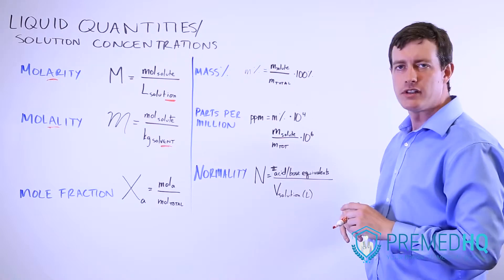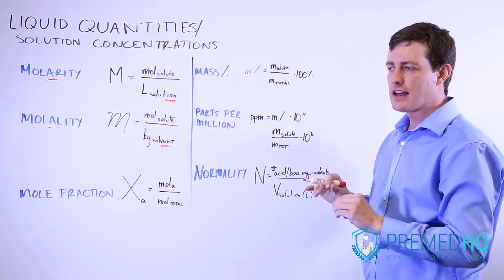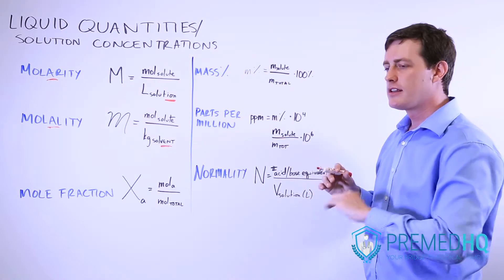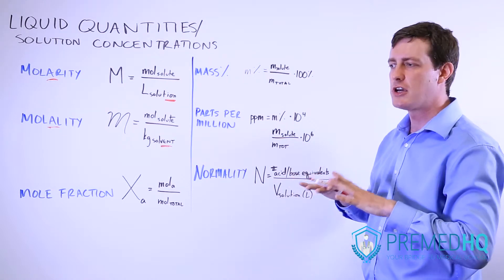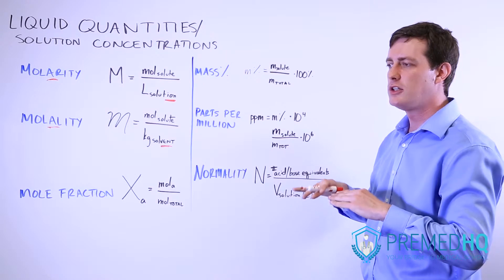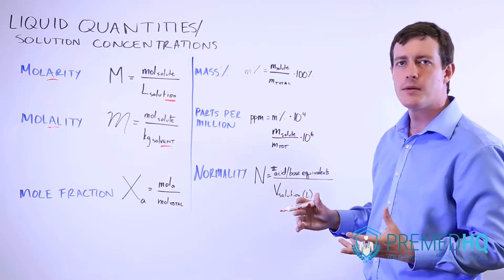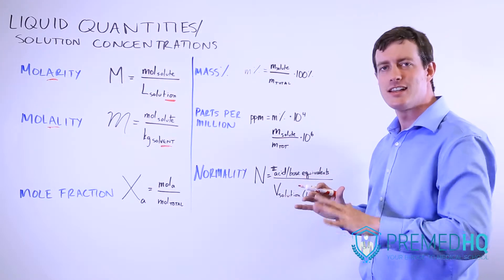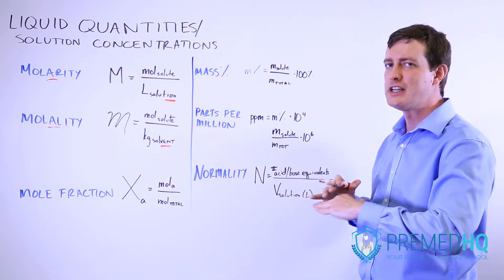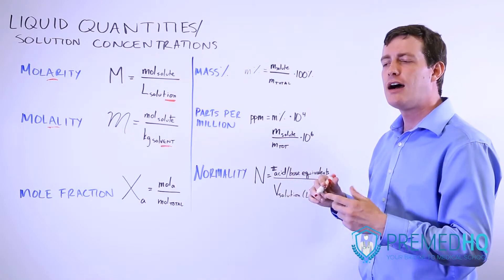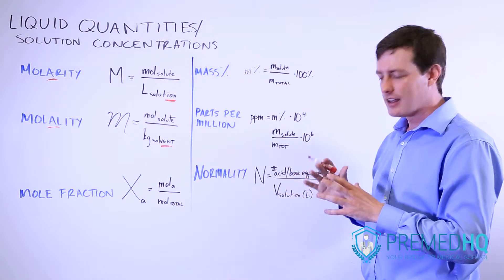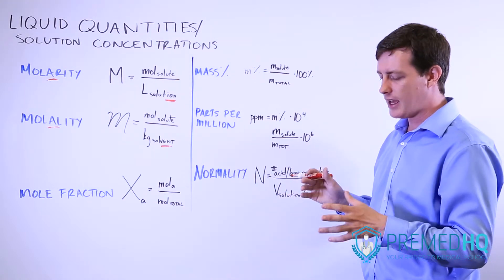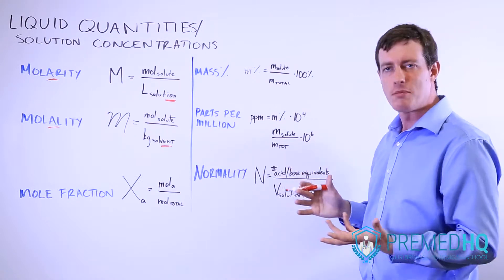An acid equivalent is the amount of acid that could give up a certain number of protons. Oftentimes it's measured as the amount that can yield a mole of protons. That doesn't mean that it has to give up those protons. A lot of weak acids won't fully dissociate, but if they have one mole of potential protons that they can give up, then that would be one normality.